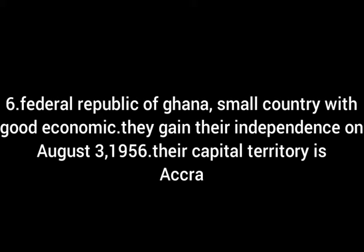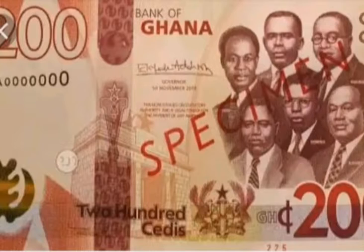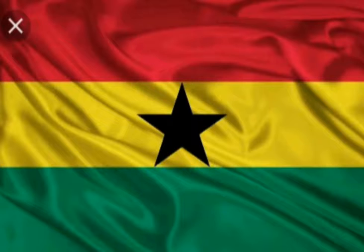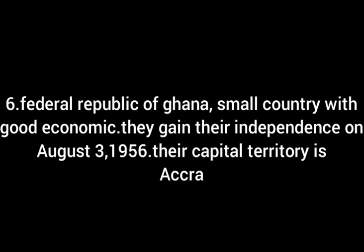Number 6, Federal Republic of Ghana — a small country with a good economy. Their president in Ghana is Nana Akufo-Ado. This is Ghana's currency, map, and flag. They gained their independence on August 30, 1956. Their capital territory is Accra.